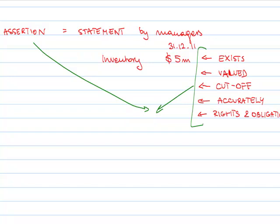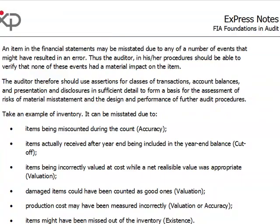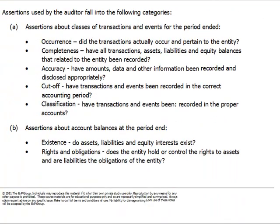The auditor's job is to check that these assertions are actually true. Auditor's procedures must be designed in order to verify that transactions occurred, they are completely included in the financial statements, they are accurate, in the proper period, and well classified. That is the objective of the auditor's procedures. For each item in the balance sheet, statement of financial position, or statement of comprehensive income, the auditor must determine and list the actual assertions that relate to that particular item, and detailed tests will be designed to address those assertions.